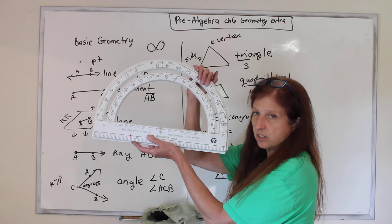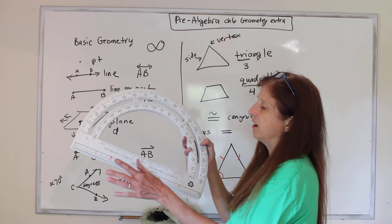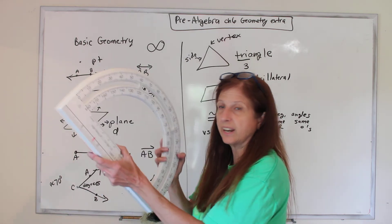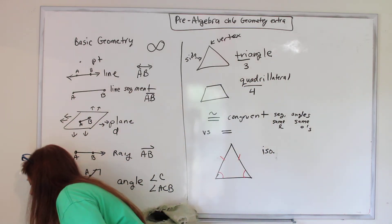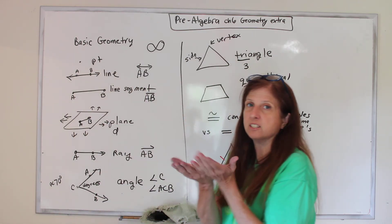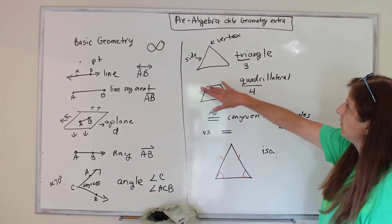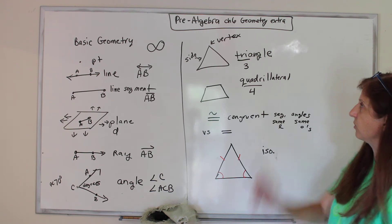So next year, not next year, year after next, you'll have geometry, and you'll have geometry tools, and you'll need a protractor and a compass, and not the kind that Jack Sparrow uses to find his island. It's one that you use to draw circles.